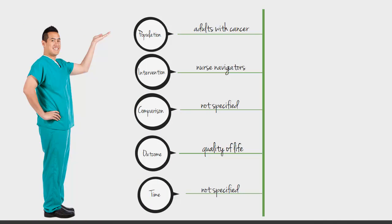To help identify the main concepts, we will be using the PCOT model. For your question, the population is adults with cancer, our intervention is nurse navigators, the comparison group is not specified, the outcome is quality of life, and the time frame is also not specified. So our main concepts are cancer, nurse navigators, and quality of life.